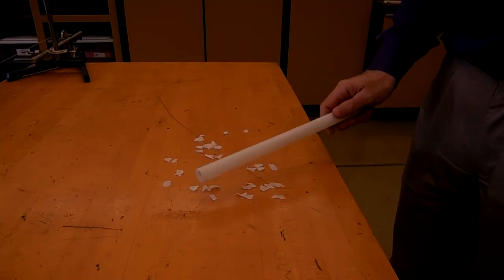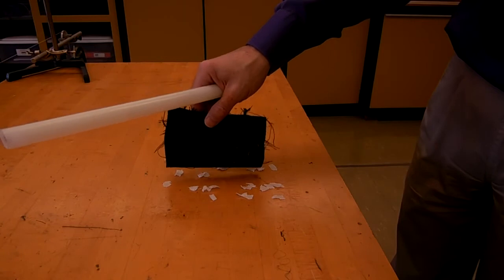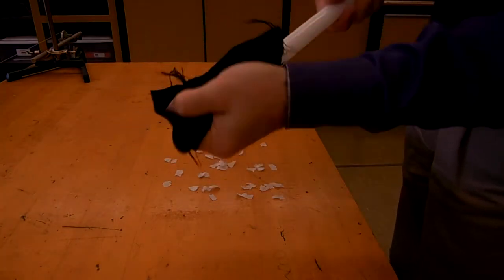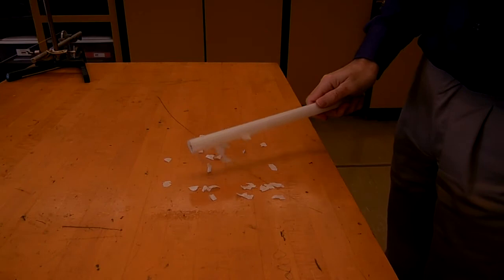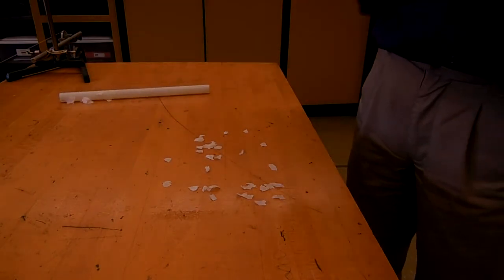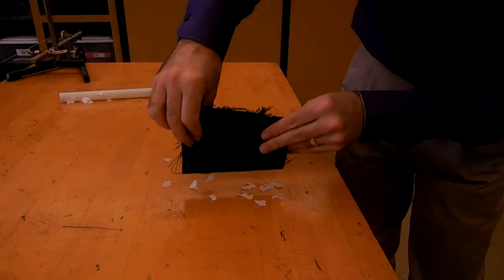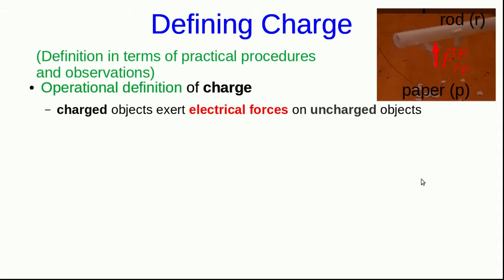The piece of plastic and the piece of wool will not pick up these pieces of paper, but if I rub the plastic with the wool, then after rubbing, the plastic will pick up the pieces of paper, and the wool will pick up the pieces of paper. This is a practical procedure and set of observations that we can use to define what we mean by charge. Charged objects exert electrical forces on uncharged objects, so after we had rubbed the rod with the wool, it was able to exert an upward electrical force on the paper and thus pick the paper up.